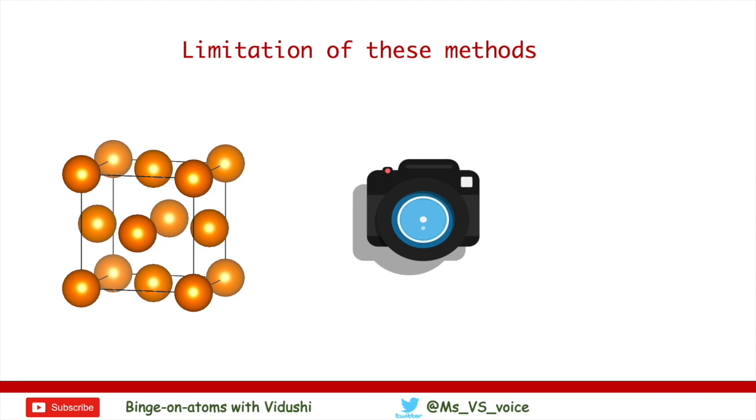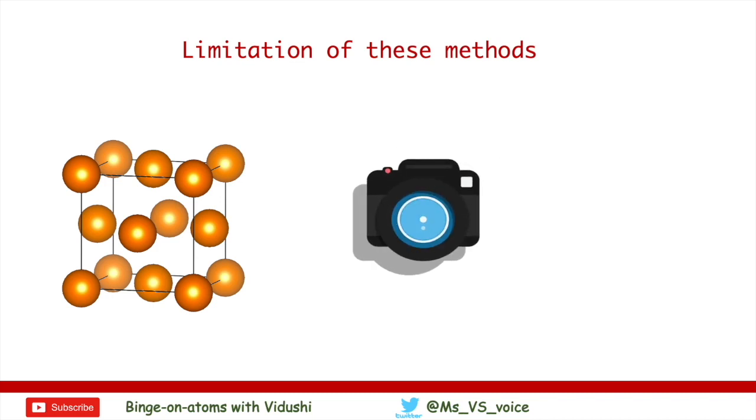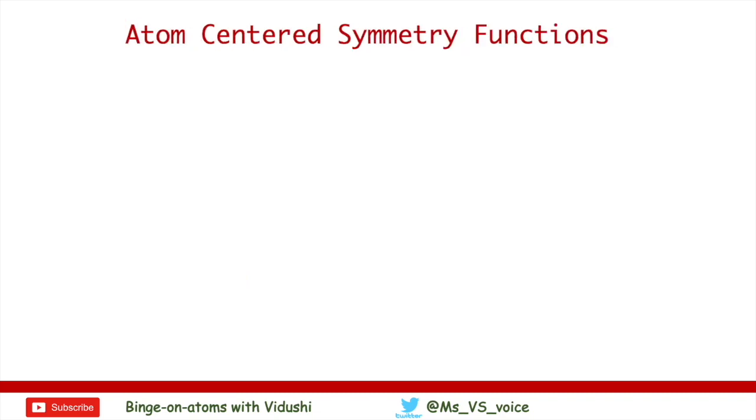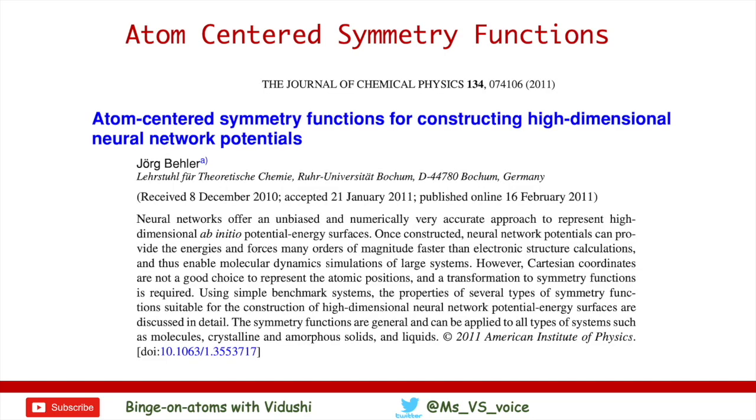That means they encode information of the entire structure into a matrix as a whole like a snapshot. You cannot separate information pertaining to any local sector in the structure. These two issues are resolved in a method called atom-centered symmetry functions. This method was first given by Behler in 2007 and since then has been actively used in a vast range of studies on materials.